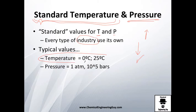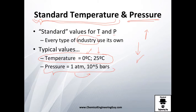As a rule of thumb, temperature in general is either 0°C or 25°C. Pressure is normally either 1 atmosphere or 10 to the 5th power bars, which are almost the same — that's roughly 10⁵ Pascals.